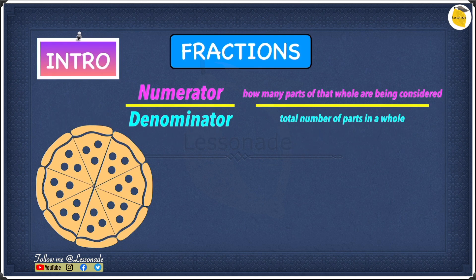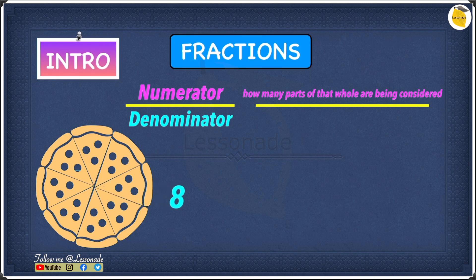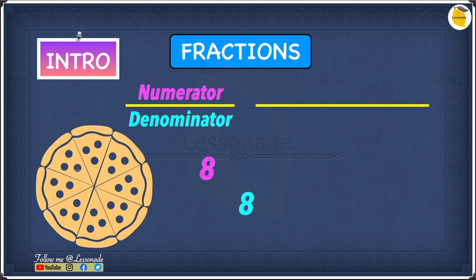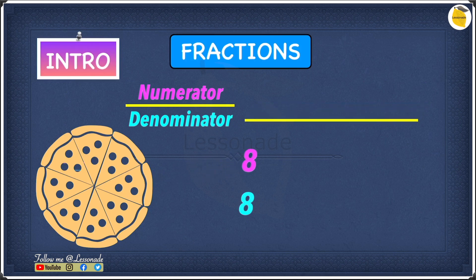Now let's find a fraction for this pizza. Starting with the denominator: the total number of slices in this pizza is 8, so our denominator is 8. For the numerator, we're considering all of it, so the numerator is also 8. Therefore the fraction for this pizza is 8 over 8.